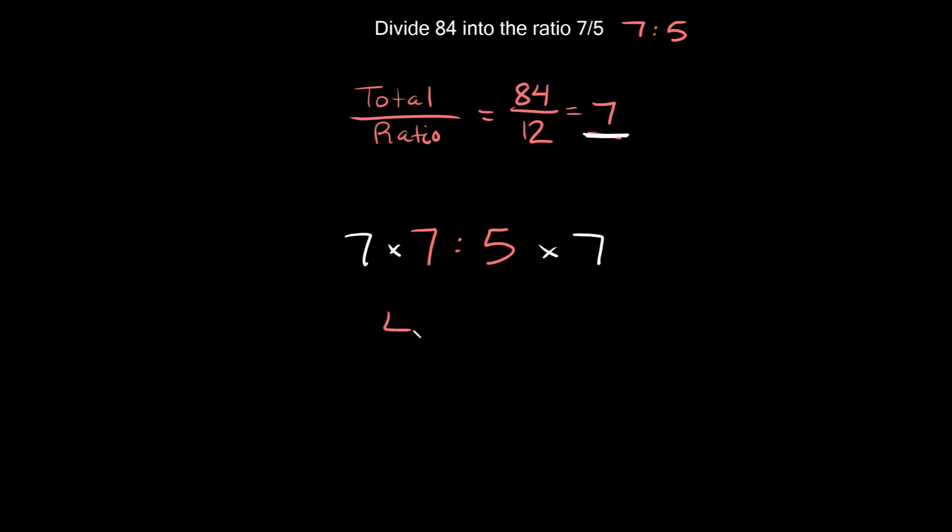So on the left 7 times 7 is equal to 49, and on the right 5 times 7 is equal to 35. All right and then again you can see that this total 49 plus 35 is equal to 84. So we know we did it right.